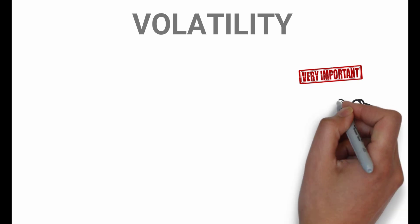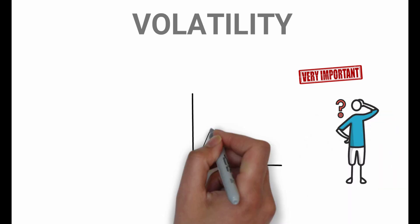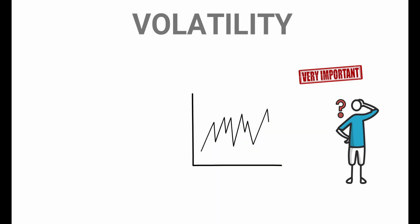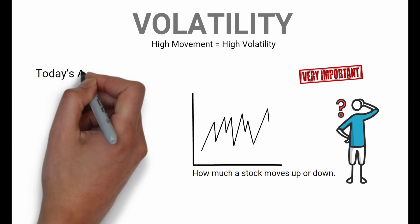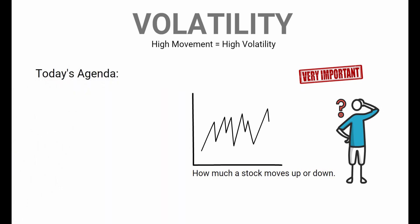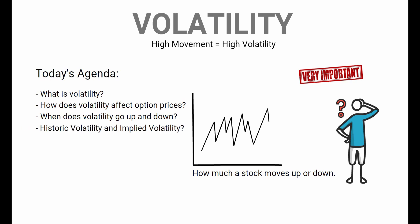Volatility is one of the most important and least understood concepts of options trading. Volatility is the measure of how much a stock moves up or down — the higher the movement, the more the volatility. In this video we will discuss what volatility is, how it affects option prices, when it goes up and down, historical volatility, implied volatility, and some do's and don'ts.